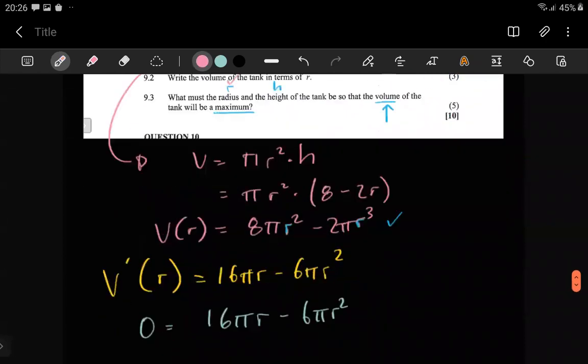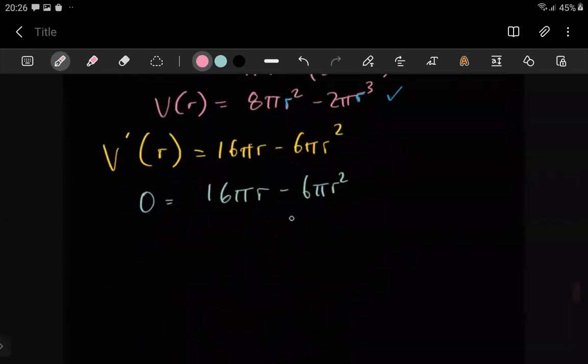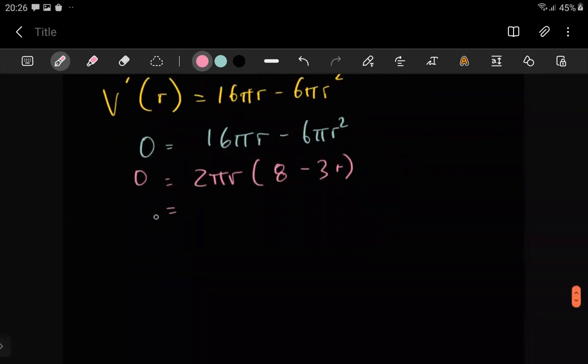Solving for r we can factorize. It looks like we can take out 2πr as a common factor. Here you're going to have 8 left, here you're going to have minus 3r. If you multiply inside you should always be able to go back up.